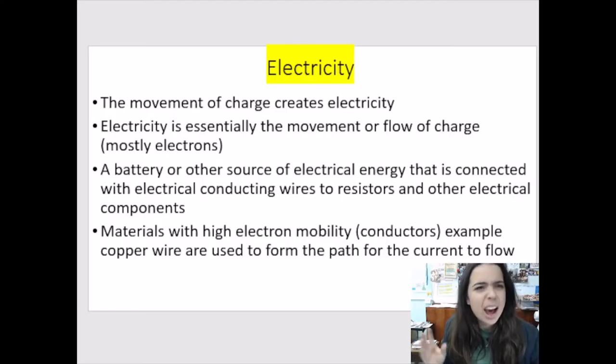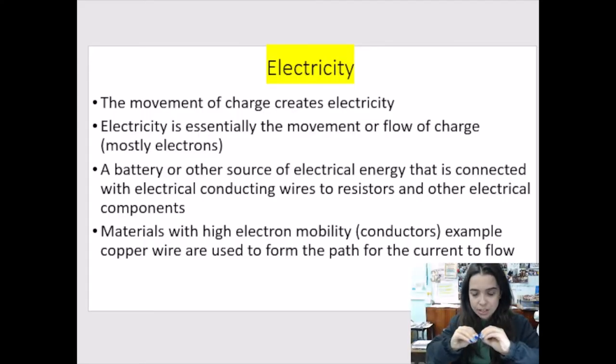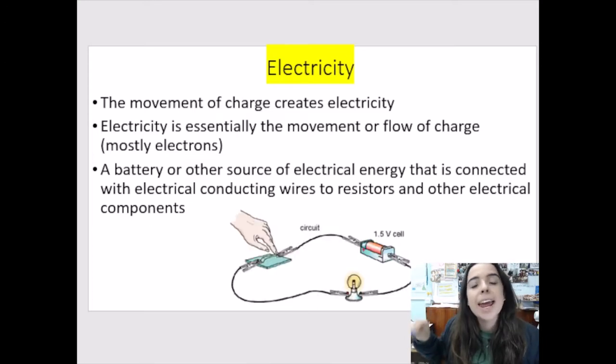Then how do they get energy? They don't just move. A battery or another source of electrical energy that is connected to our conducting wires, that battery provides the charges with the energy that they need to flow throughout the circuit. Remember, we need a closed circuit with a conducting material like copper and an energy source in order for the circuit to function correctly.